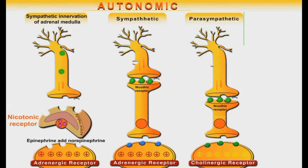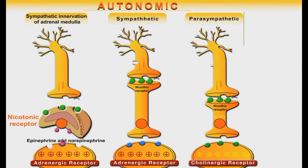In sympathetic innervation of the adrenal glands, there are no ganglions or synaptic spaces, but direct innervation of the adrenal medulla results in the release of both epinephrine and norepinephrine molecules into the blood. From the blood, the norepinephrine and epinephrine molecules are distributed to various adrenergic receptors in the body to exert a sympathetic-like response.